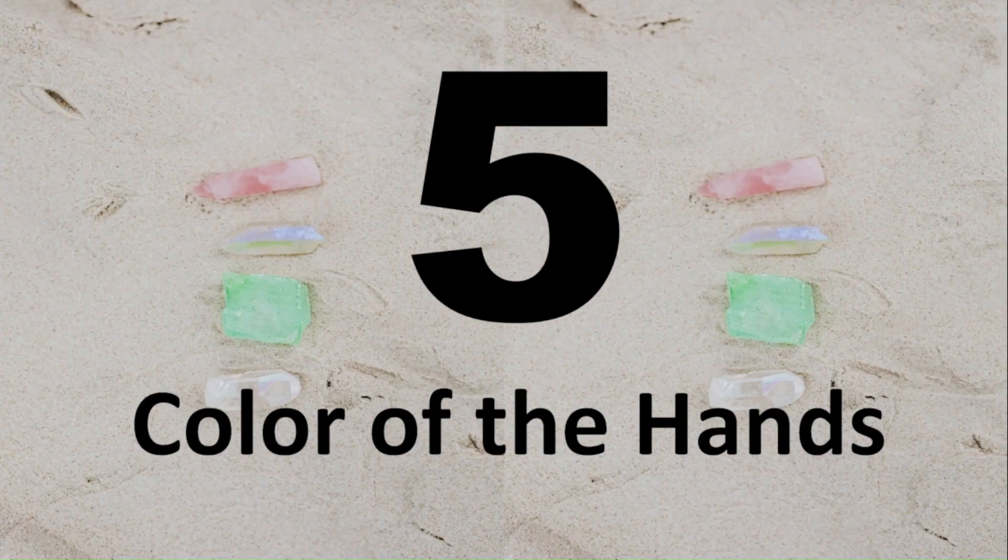Number five. The color of the hands. When looking at the color of the hands, keep in mind the time of year, as during the summer the hands might be more tan than in the winter time. If the hand is tan, looking at the palm would give you a more accurate reading.